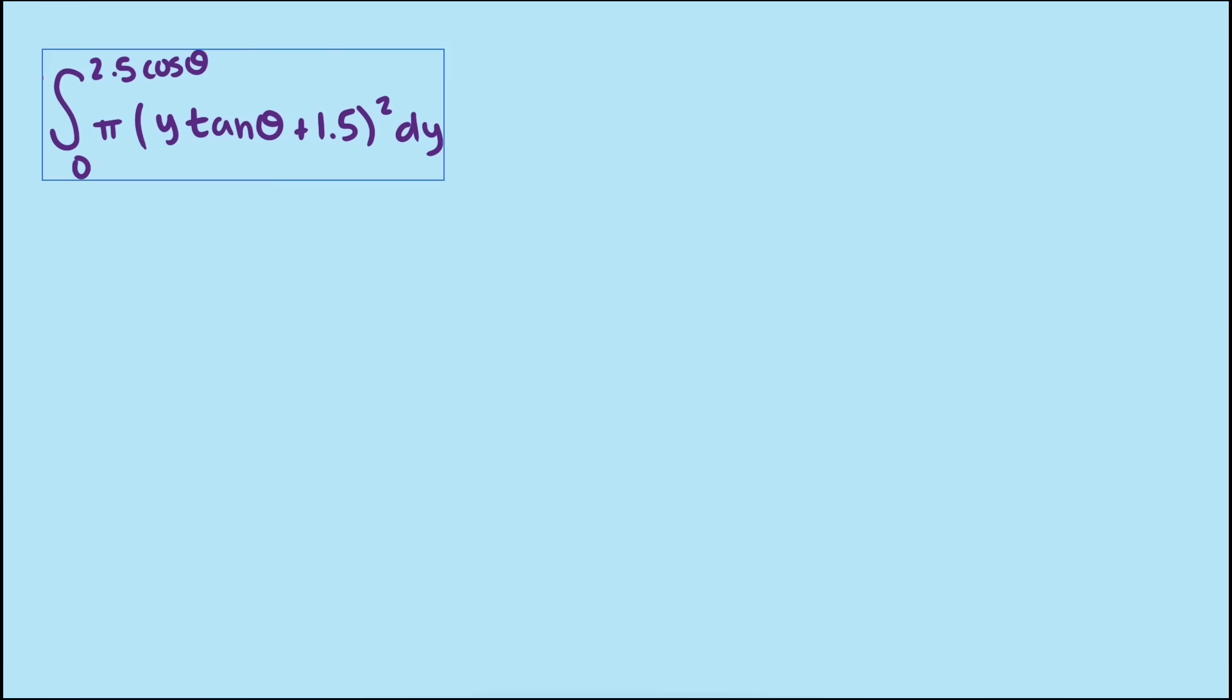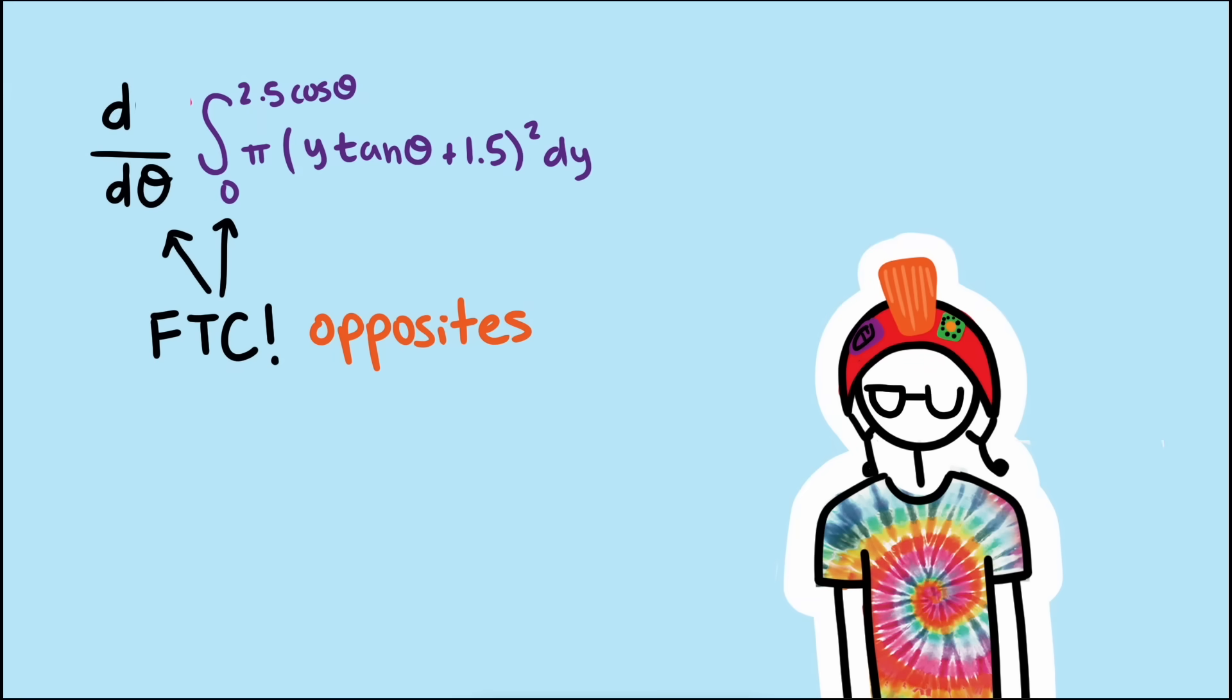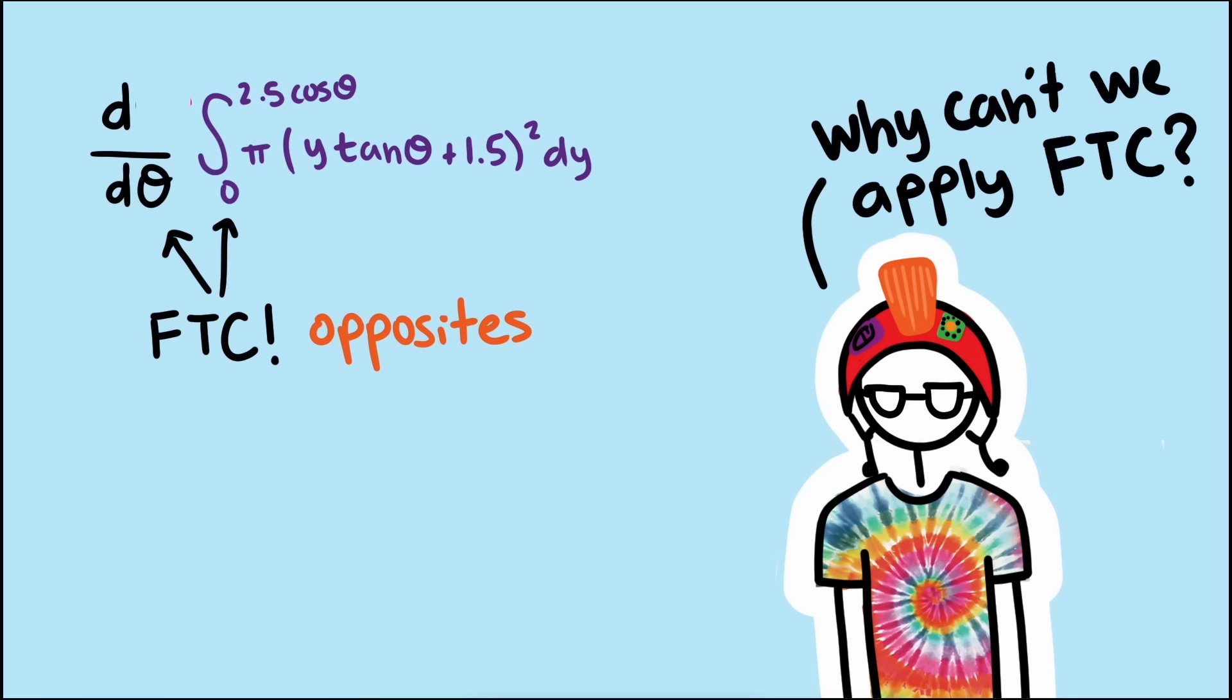Now, semi-nerds might be thinking that we could take the derivative to find the maximum, so we have a derivative of an integral, and that could save us a lot of work. The fundamental theorem of calculus does say that those operations are opposites after all. But put on your nerd glasses and focus on this expression. Why can't we apply the fundamental theorem of calculus right now? It is because we are integrating with respect to y and differentiating with respect to theta. Since those aren't the same variables, we can't apply the fundamental theorem of calculus.